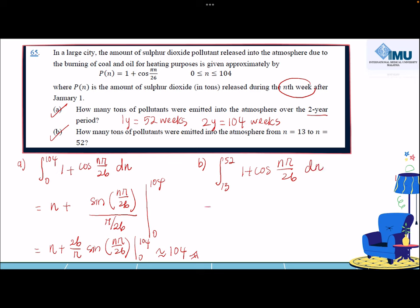Since you already know, the integration of this function will give you n plus 26/π times sin(nπ/26). However, the change is in your limits. It will be from 13 to 52. Evaluate accordingly, you will get approximately 31 tons.